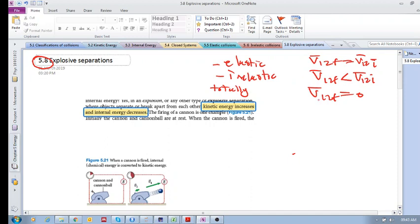So the final relative velocity between the two objects is zero. Now explosive separation is the opposite really of a totally inelastic collision. In a totally inelastic, the final relative velocity is zero, right? So two objects come at each other like that, they collide and then they move with the same velocity.